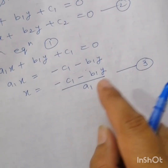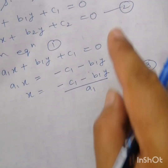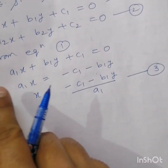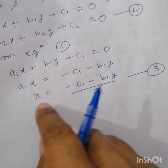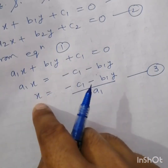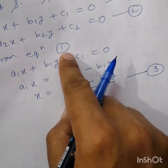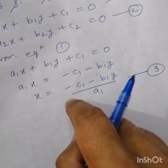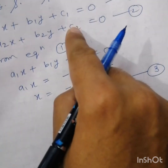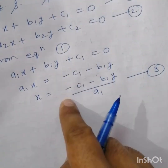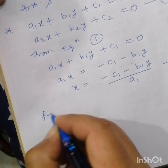So x equals minus c1 minus b1y divided by a1 — call this equation three. Now from equations three and two, we calculated the value of x using equation one, and we will substitute this value into equation two.